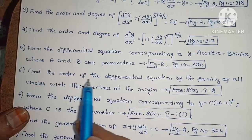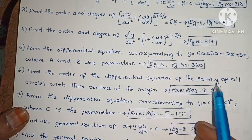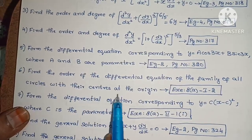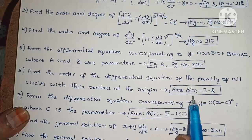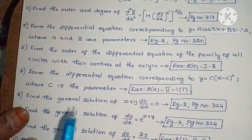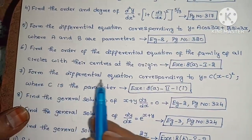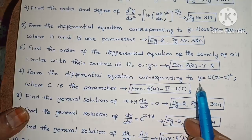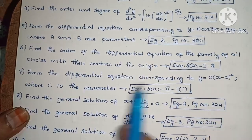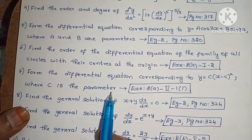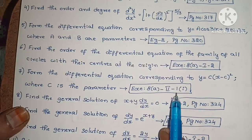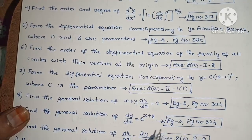Next, find the order of the differential equation of the family of all circles with their centers at the origin. Next, form the differential equation corresponding to y equals c·(x minus c)², where c is the parameter.